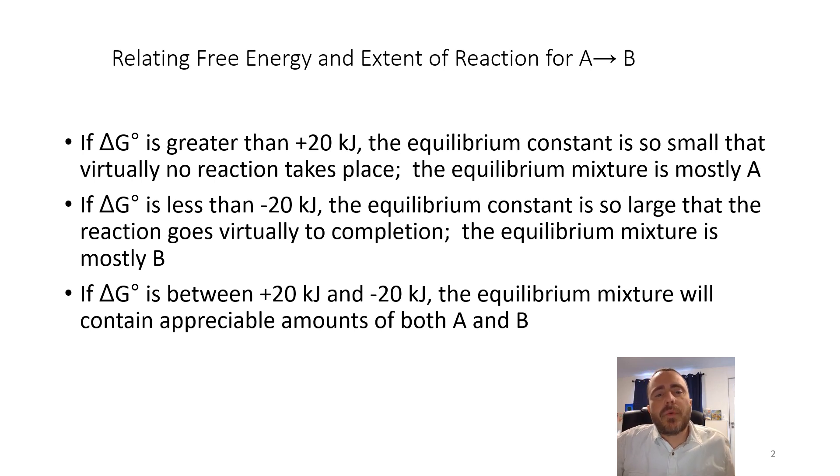It's just a generalization. When we have a bigger delta G, something bigger than positive 20 kilojoules, then what we say is that that reaction basically doesn't take place very much, because remember positive means that it's going to be non-spontaneous. So for a reaction from going from A to B, if that's non-spontaneous, then we're almost going to make no B and we're going to be left with mostly A at the end.